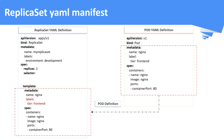Coming back to the selector field — this field is used by the replica set to identify the correct pods in the Kubernetes cluster. There may be many pods in the cluster, so how does the replica set identify which pod belongs to itself? That's done with the help of the selector field. We should mention the correct labels of the pod in the selector section under the matchLabels field. The selector label and pod label should match, otherwise the replica set will be erratic. In our example, it is tier: frontend. Once you submit this definition, your replica set will be created with three replicas in place.